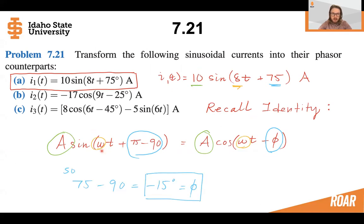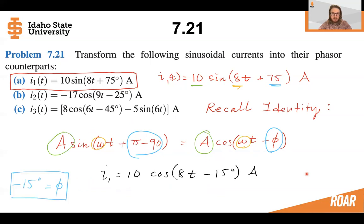We know that the frequency is 8. And this part, 75 minus 90, must be equal to this phase in the standard sinusoid. So the phase is going to be equal to minus 15 degrees here.